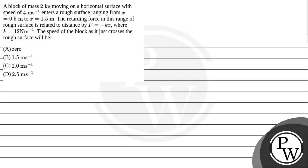Hello everyone. Let's read the given question. The question states that a block of mass 2 kg moving on a horizontal surface with speed of 4 m per second enters a rough surface ranging from x equal to 0.5 m to 1